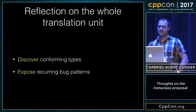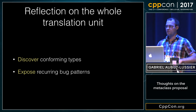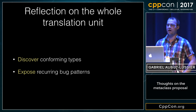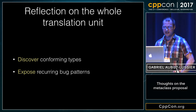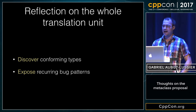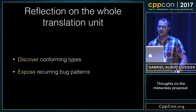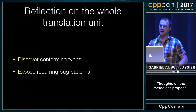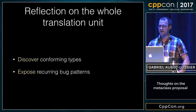Another thing I really like is that using the compile-time static reflection stuff, you can actually reflect on your whole translation unit, which means you can iterate over all of the members of a translation unit, and maybe even discover some conforming types which conform to the constraints of one of your Metaclasses — and you could just use the compiler to discover those in a huge code base. And if you flip things around, you could actually use your Metaclass to expose recurring bug patterns you notice in your code base.